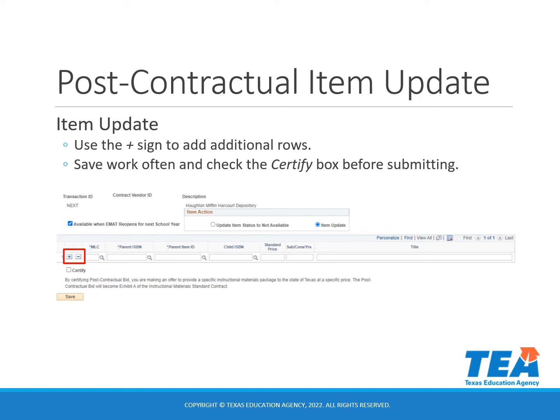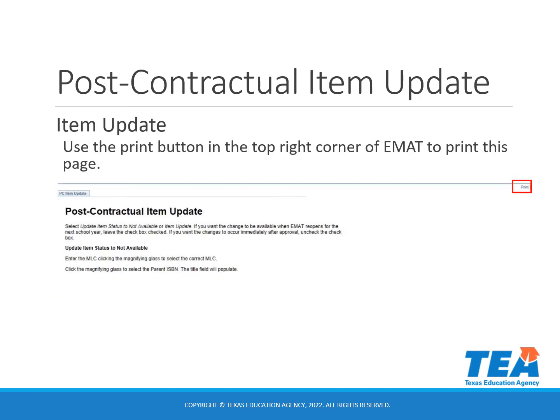You will use the plus sign to add additional rows. You will need to save your work often, and you will select the certify box before submitting. On the top of the item update page, there is a small print button in the top right-hand corner. You will use this to print the page.